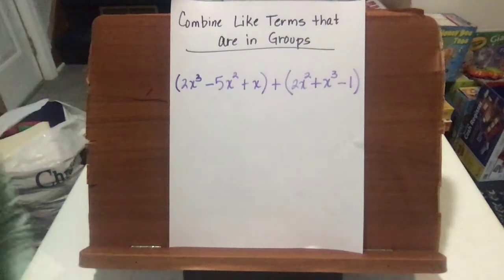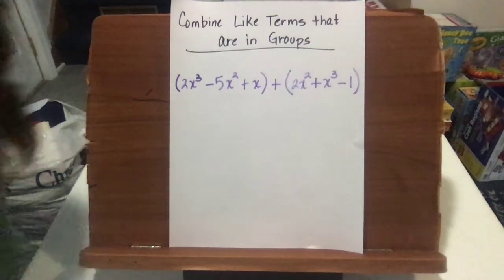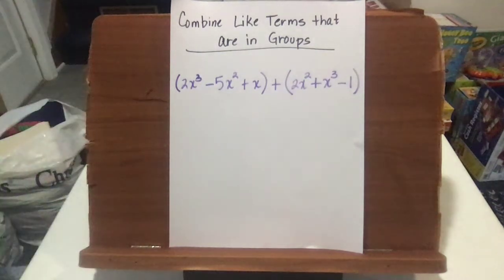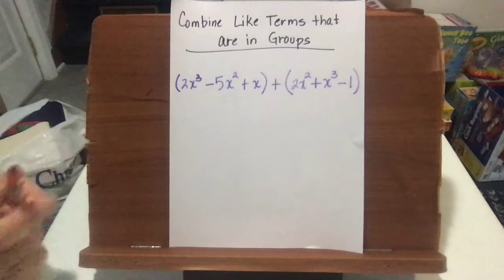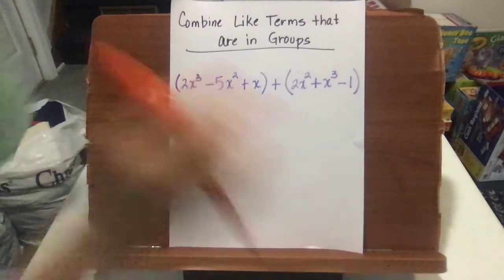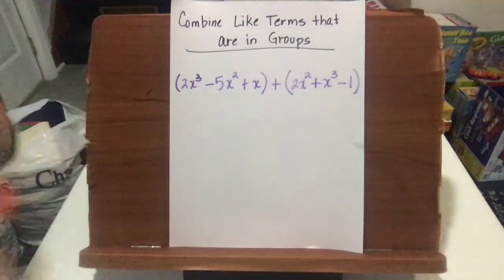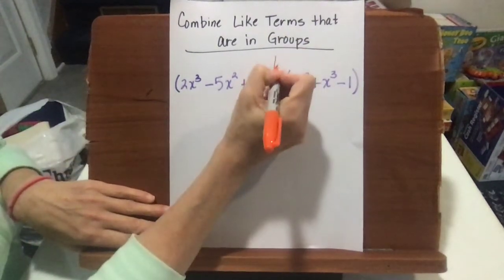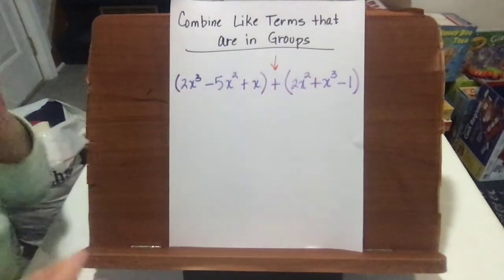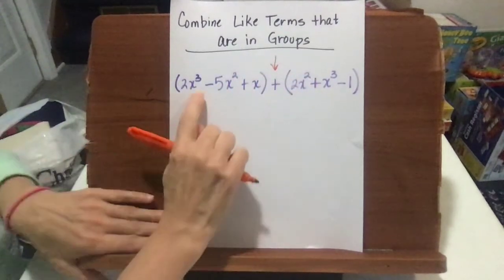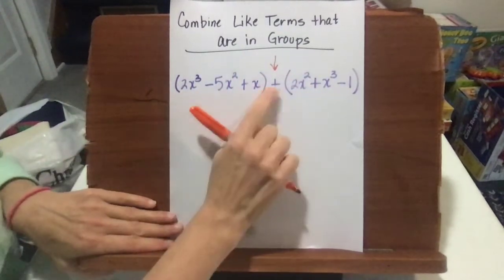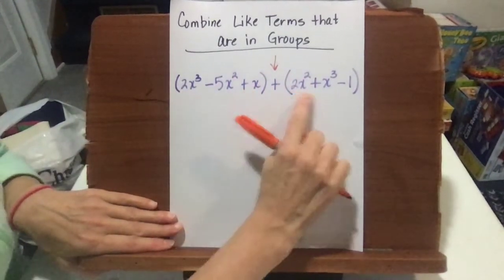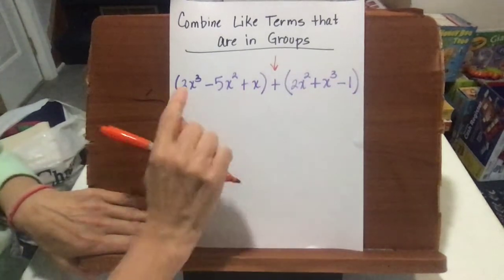We're going to take a look today at combining like terms that are put together in groups. The first thing we've got to do is take a look at what the operation is in between. We're going to add this group to this group of terms.